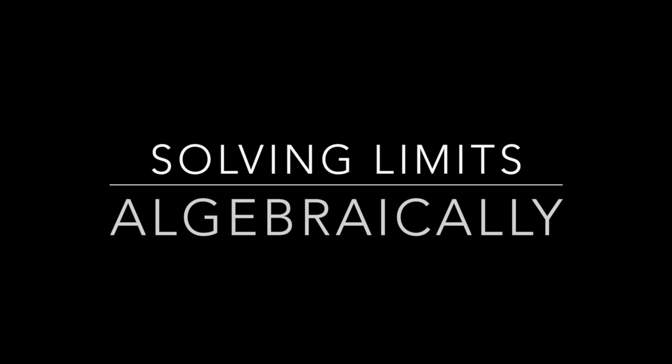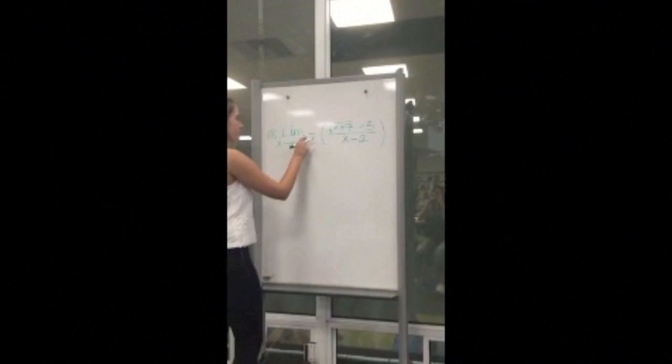Problem 18 is a limit of square root of x plus 7 minus 3 divided by x minus 2 when x approaches 2.